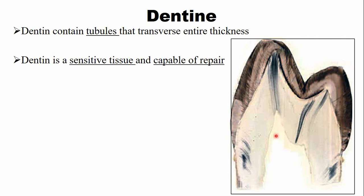These odontoblast cells are the formative cells of dentine and they have the potential to repair dentine in case of any trauma to the tooth structure. In addition, there are stem cells within the living tooth that have the potential to differentiate into new odontoblasts. So dentine is a sensitive tissue and is capable of repair.